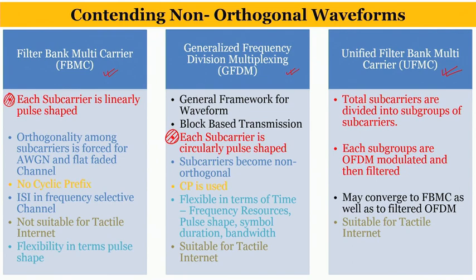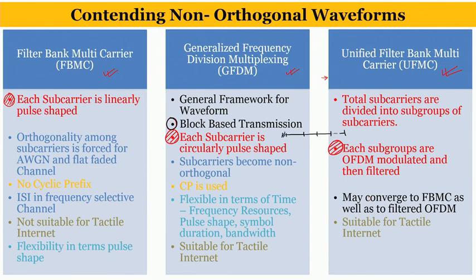In UFMC, subgroups are OFDM-modulated and then filtered. In FBMC and GFDM it is per-subcarrier based, whereas in UFMC it is group-based, and in OFDM there is one filtering for the entire set. This is a trade-off between the extremities. GFDM is a block-based transmission scheme where multiple symbols are grouped together, a block is formed, and a CP is added in front of the entire block, whereas FBMC and UFMC operate symbol by symbol.